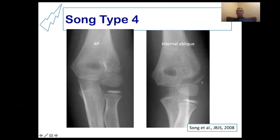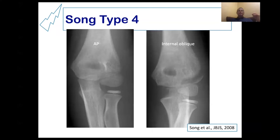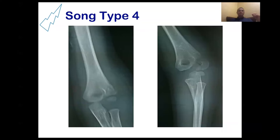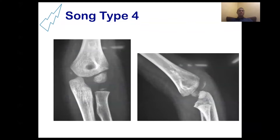Type four is displacement more than two millimeters. In the anteroposterior view it looks minimally displaced, less than two millimeters, but in the internal oblique view the gap is clear. Another example of type four shows wide displacement, although the anteroposterior view looks like minimum displacement.